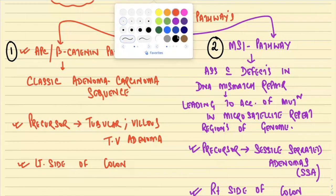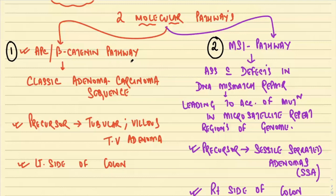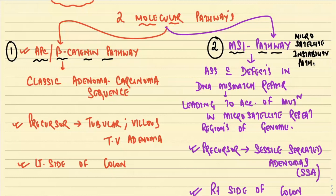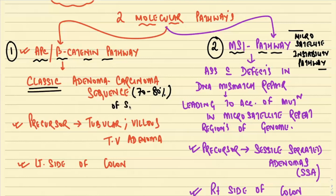Now starting the molecular pathogenesis of colorectal carcinoma. There are two very important molecular pathways. One is the APC/beta-catenin pathway, and the other is the MSI pathway — microsatellite instability pathway. The APC/beta-catenin pathway is responsible for the classic adenoma-carcinoma sequence and is responsible for 70–80% of sporadic colorectal carcinomas.